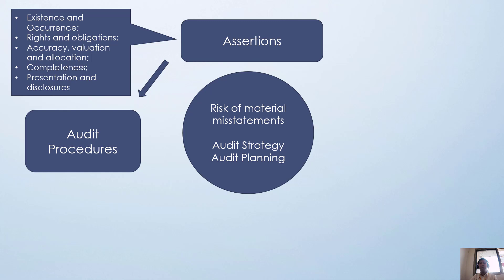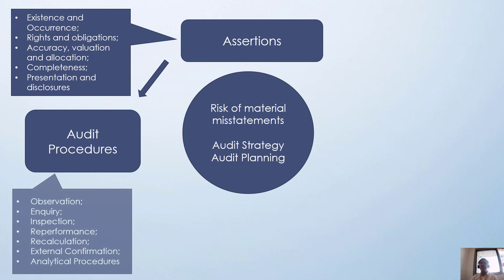In audit procedures, we test the assertions. Examples of audit procedures include: observation, inquiry, inspection, re-performance, recalculation, confirmation or external confirmation, and analytical procedure. Assertions and procedures are related — assertions come from management, while audit procedures are the steps to test those representations management has made.